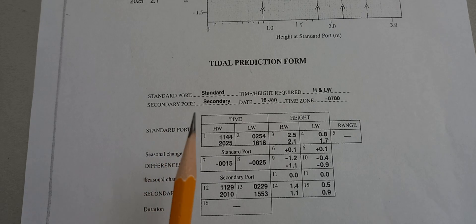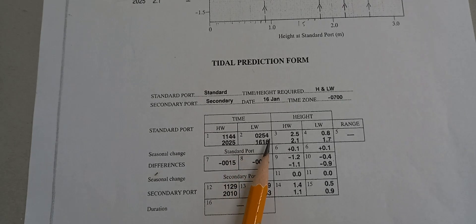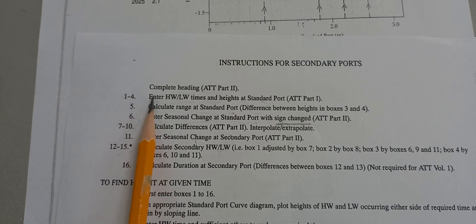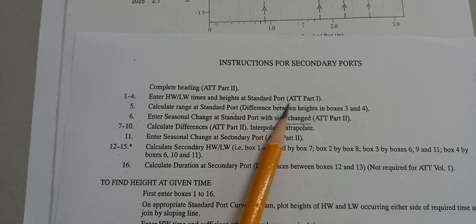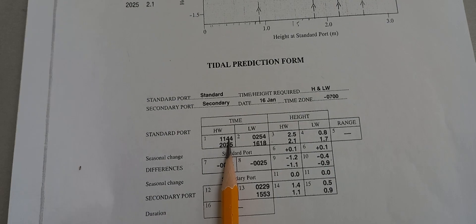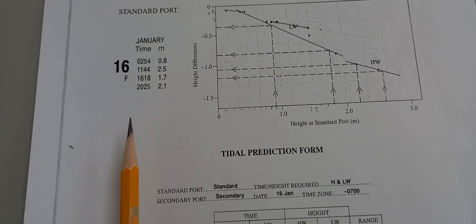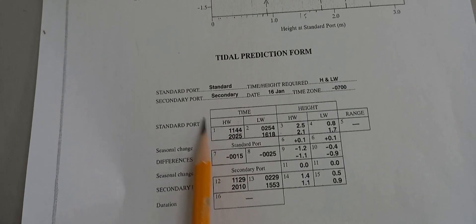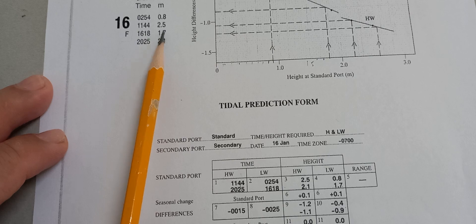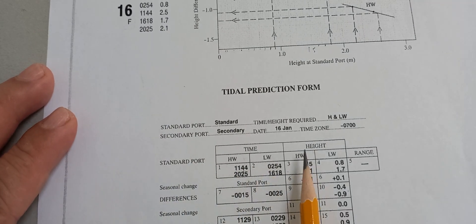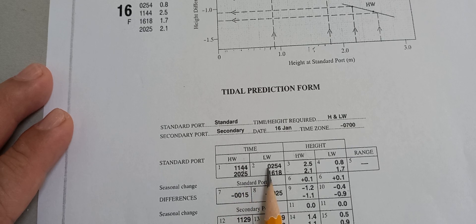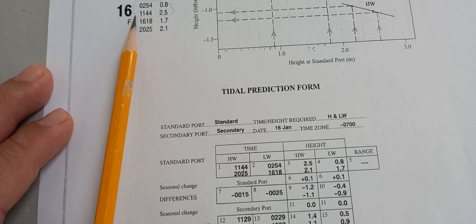To fill up the tide prediction form, numbers 1 to 4, the instruction for secondary port says to enter the high water and low water times and heights at the standard port from Admiralty Tide Tables Part 1. This was extracted for January 16 at the standard port. For high water, the highest is at 1144, that is 2.5, so you put beside high water: 2.5. Next is low water — the morning entry and the afternoon entry.